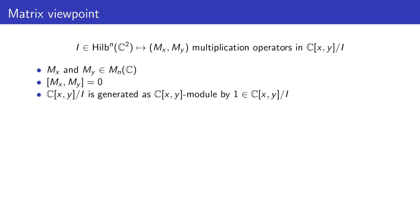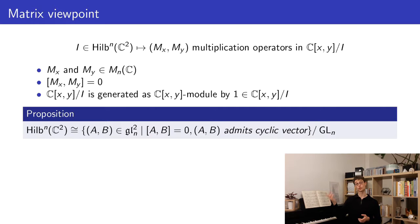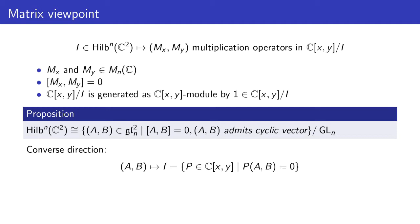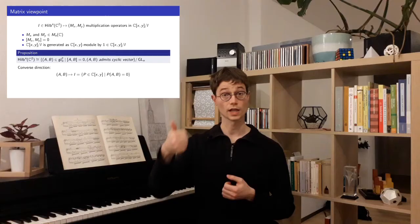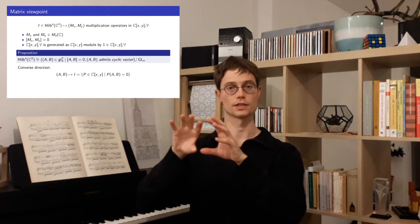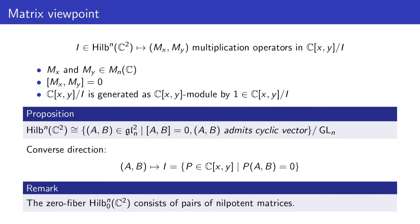We have the following proposition: the punctual Hilbert scheme is given by pairs of commuting matrices which admit a cyclic vector, quotiented out by the action of GL_n by conjugation. To show this, it is sufficient to give the inverse direction: how to define an ideal from a pair of commuting matrices. Given two commuting matrices A and B, we associate the set of all polynomials P such that P(A, B) equals zero. This always gives an ideal, and the fact that A and B admit a cyclic vector assures it will be an ideal of co-dimension n. In this matrix viewpoint, the zero fiber is just given by pairs of matrices which commute and which are nilpotent.